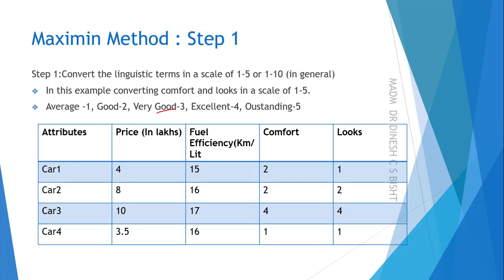The obtained numerical values are 2, 2, 4, 1, 1, 2, 4, 1. We now have a decision matrix in which all values are in numerals.